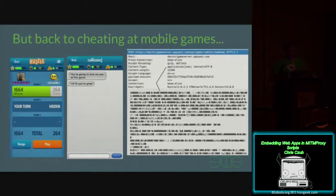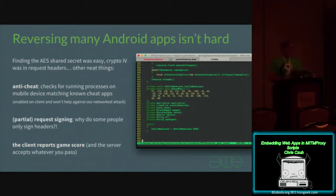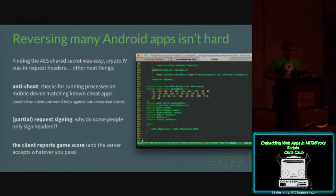Back to cheating at mobile games. It turns out reversing many Android apps isn't really hard, especially crappy games. You can usually get pretty good Java code out of it after you open up that APK, decompile to JAR, and poke around. Finding the AES shared secret key was super easy, and the crypto IV wound up being in the request headers themselves. I wrote a basic little routine to decrypt it, tried to get some traffic — it worked.